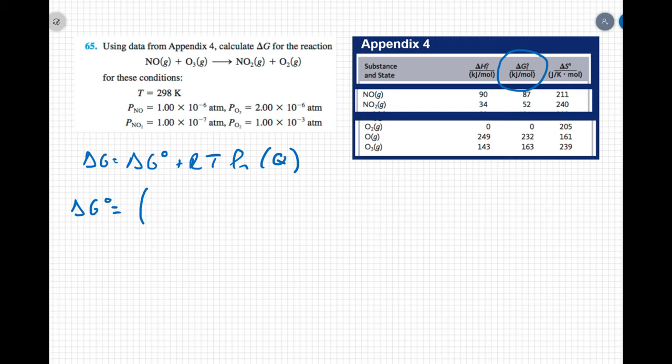So my products are going to be NO2, which has a standard free energy of formation of 52, plus O2 gas, which is a free element, so it doesn't have any heat of formation or free energy of formation, minus the free energy of formation of my reactants. So NO is 87, plus O3 ozone, which is 163. Negative 198 kilojoules. I know R, that's my gas constant. I'm given T, so I need Q.